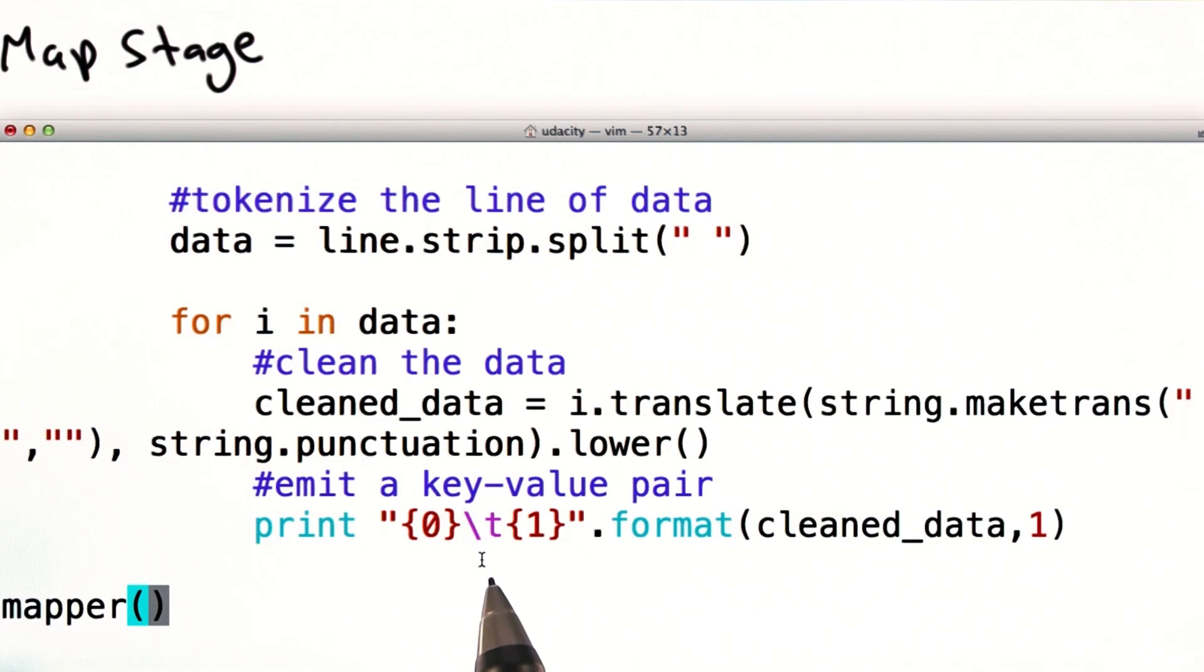Then for each word, we emit a key-value pair: the word itself and the number one. Note that the key-value pair is separated by a tab. So if a particular word appears multiple times in the document, we will emit multiple identical intermediate key-value pairs—the word and the number one, over and over again.